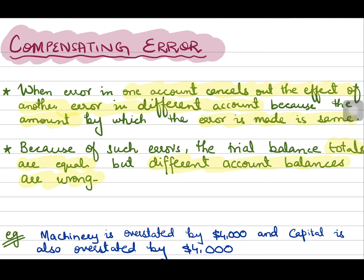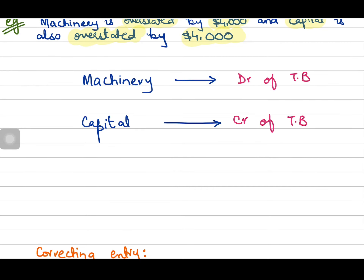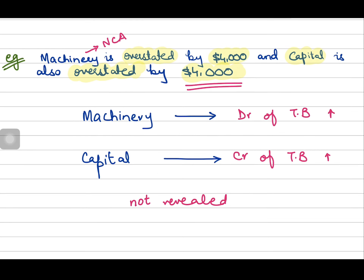The reason why there is a problem in both of these accounts is not because we recorded a transaction wrongly — these are independent of each other and not related to each other. The amounts by which both accounts are affected are the same. Machinery appears on the debit side of the trial balance and capital appears on the credit side. Since both accounts appear on different sides of the trial balance, this error was not revealed because both sides were overstated by the same amount of four thousand dollars.